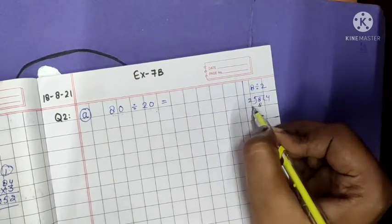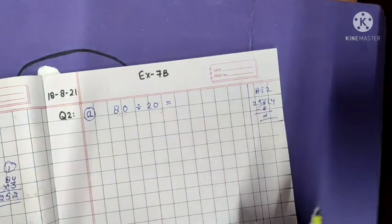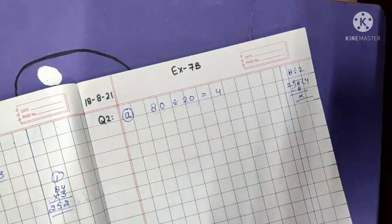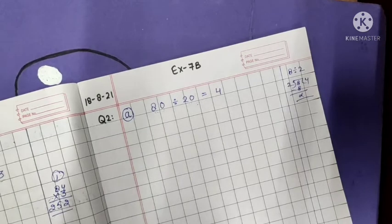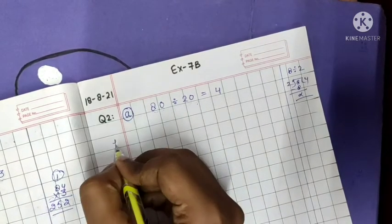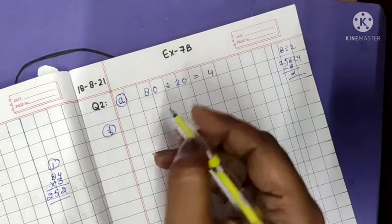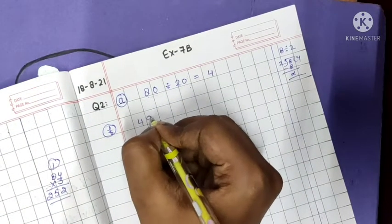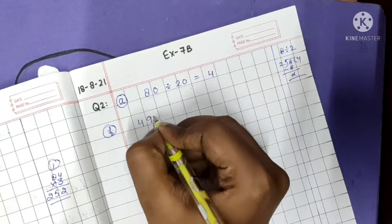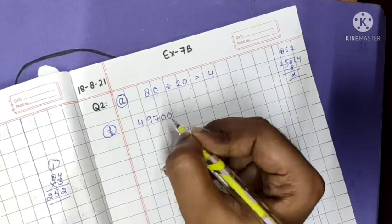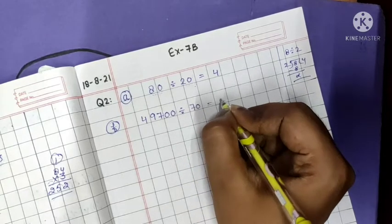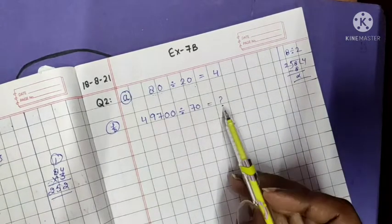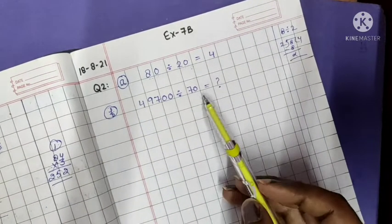Divide it. 2 for the 8. So what will be our answer? We will write 4 here. Without any long division this question can be solved. Now come to F part. F part is 49,700 divided by 70. What we need to calculate here? We need the answer here.